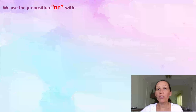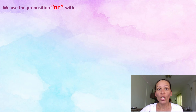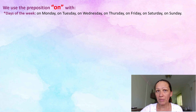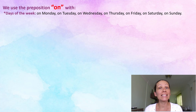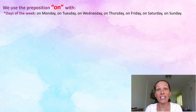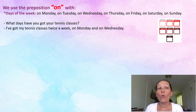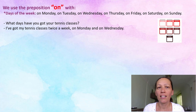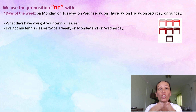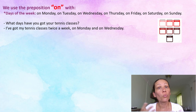Now let's talk about the preposition 'on'. We use 'on' when we talk about days of the week. For example: on Monday, on Tuesday, on Wednesday, on Thursday, on Friday, on Saturday, on Sunday. So what days have you got your tennis classes? I've got my tennis classes twice a week, on Monday and on Wednesday.